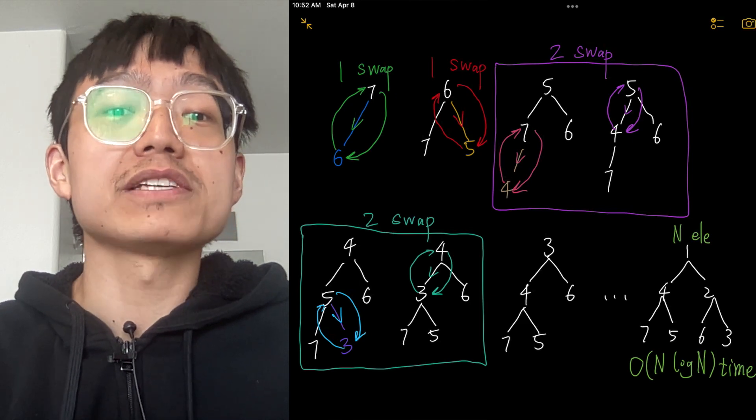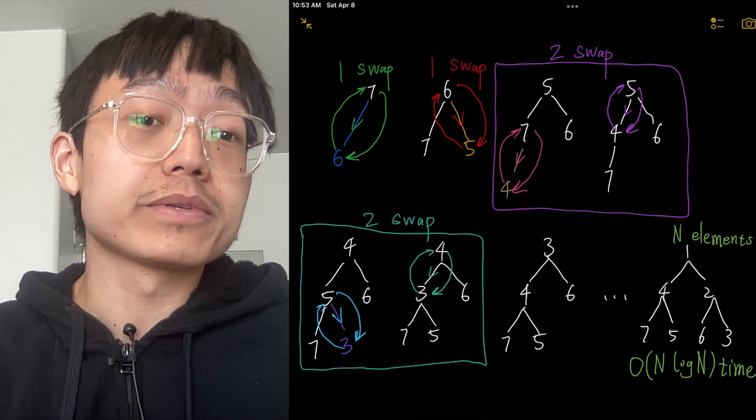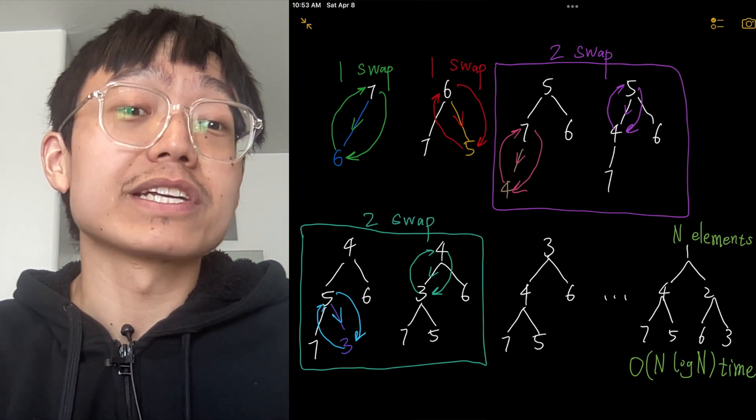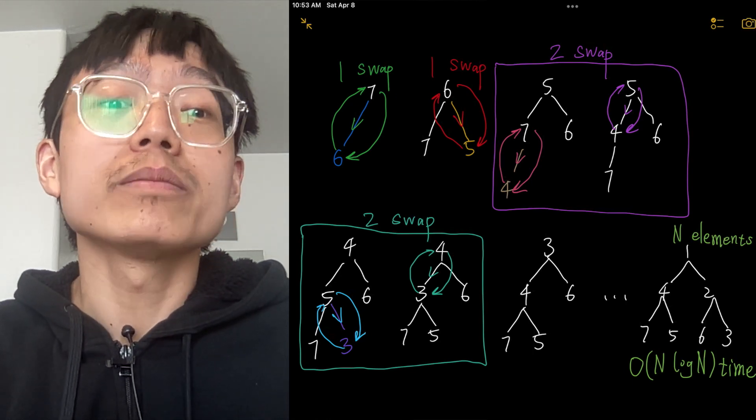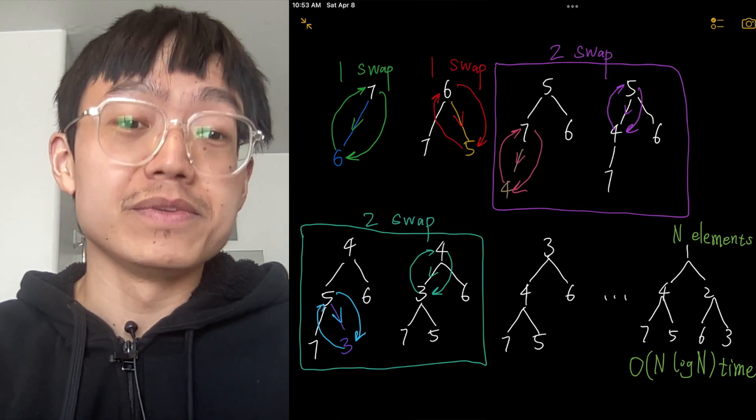And this is the top-down approach, which is generally slower than the bottom-up approach that has time complexity of O(n). This is the top-down approach.